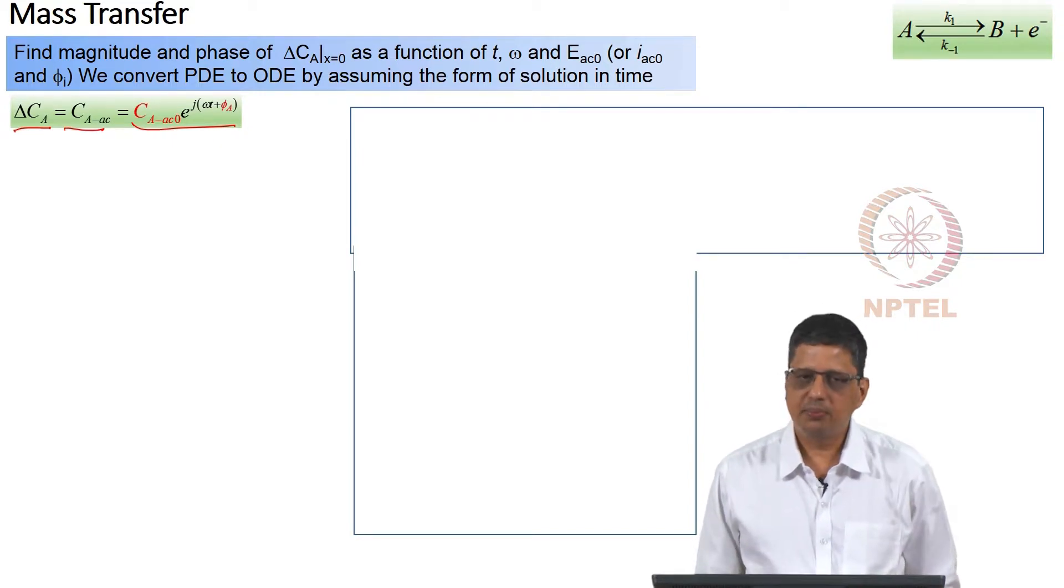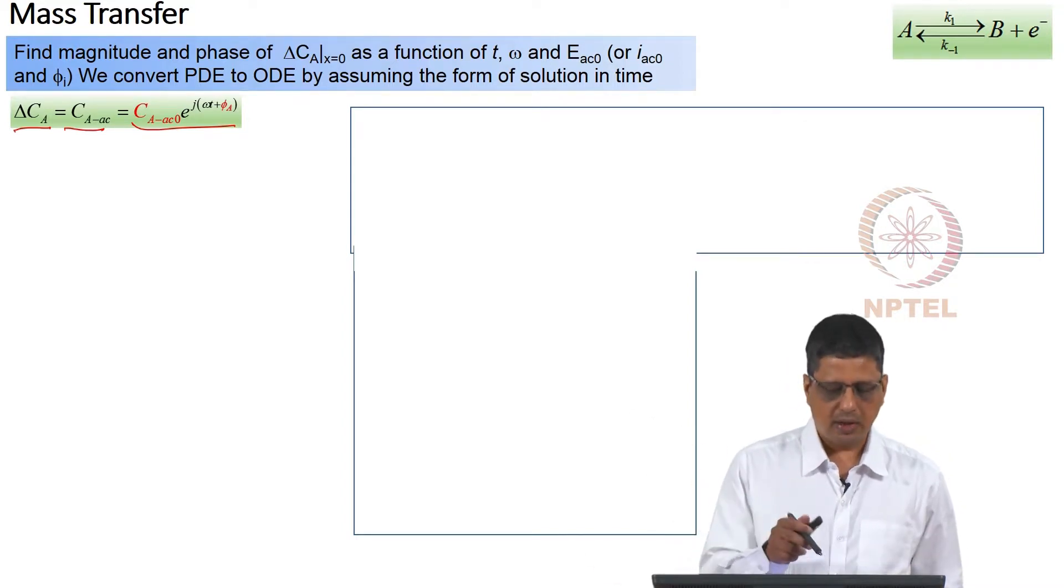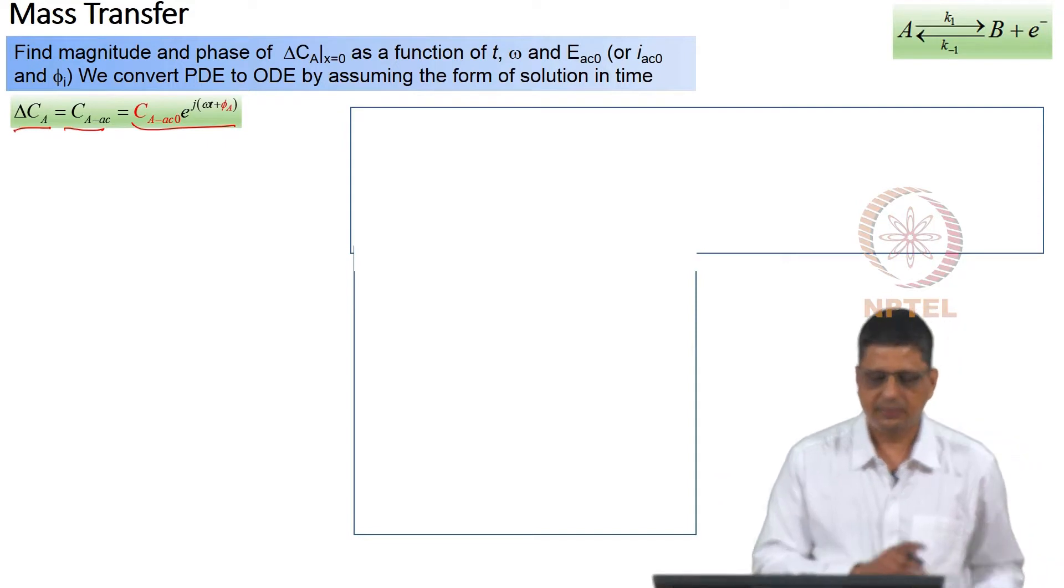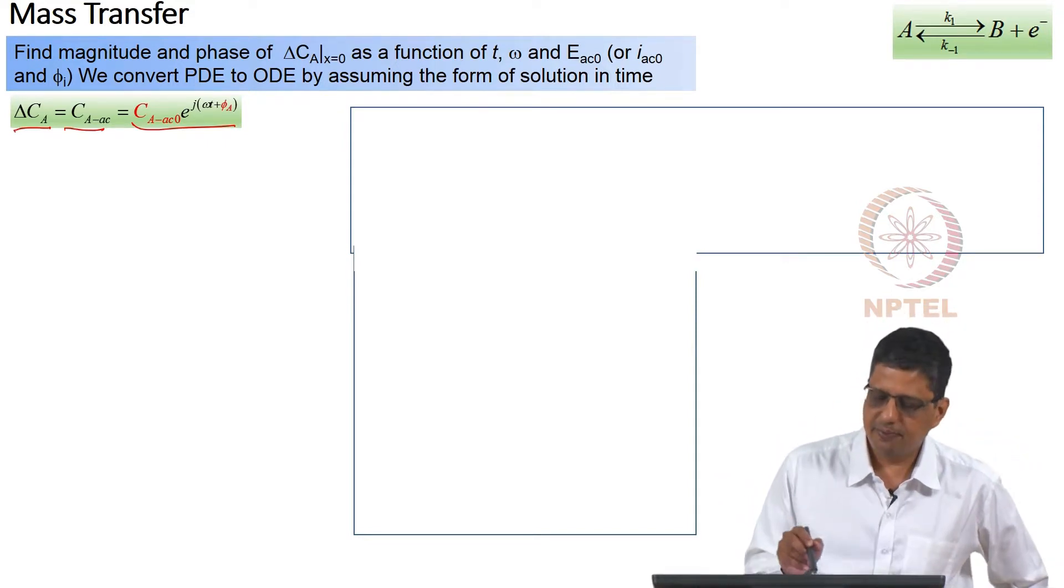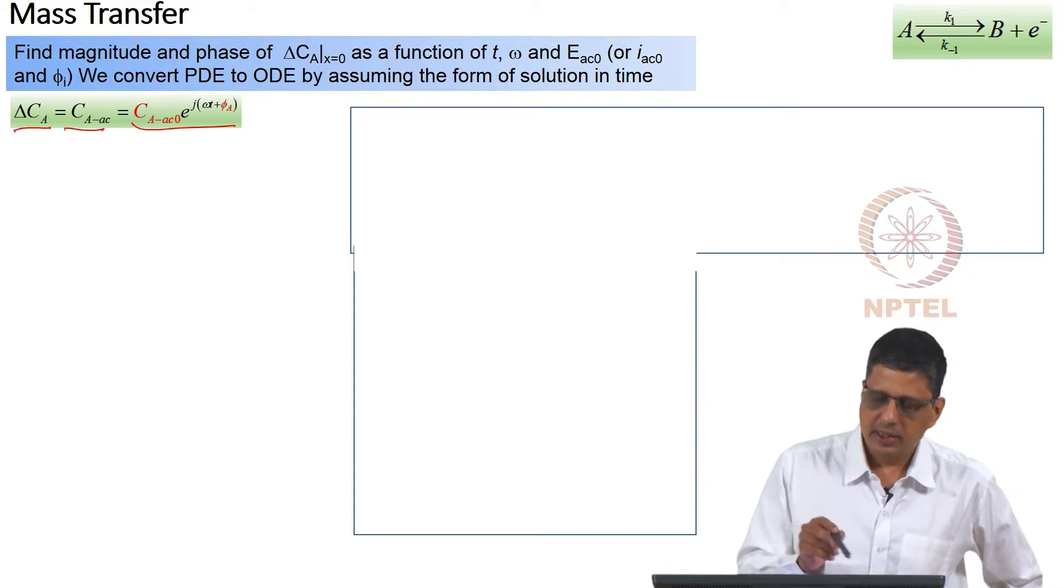Now as long as the E_AC_0 is small, we can linearize the equations. Only after linearization, we got K1_s, K1_DC into (1 + B1·E_AC). We neglected the higher order terms. Under those conditions, we can write concentration will also show a sinusoidal fluctuation. Because we assume del C_A has particular form, it is given as C_A_AC_0·e^(jωt+φ_A) and likewise for C_B.